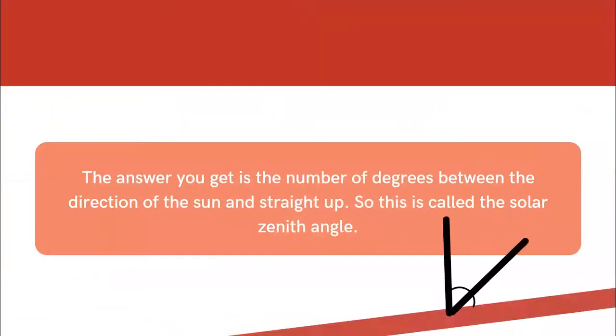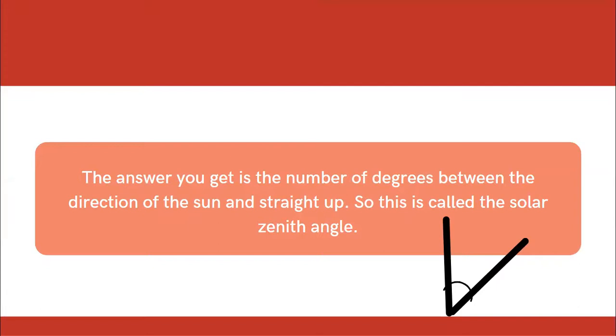So the answer you get is the number of degrees between the direction of the sun and straight up. So this is called the solar zenith angle.